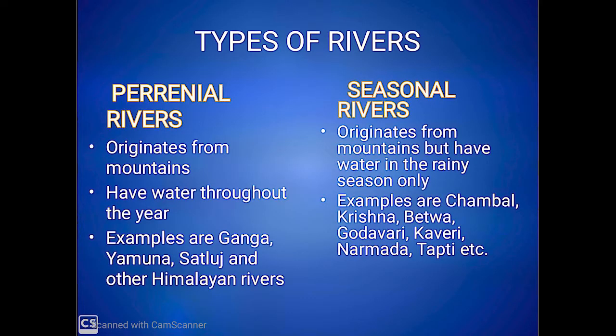On the basis of quality and nature, there are two types of rivers. These are perennial rivers and seasonal rivers. First, we will talk of perennial rivers. These rivers originate from the melting of ice in mountains and have water around the year. Ganga, Yamuna, and Satluj are examples of perennial rivers.